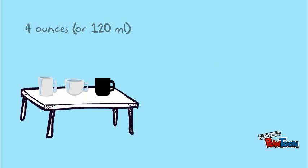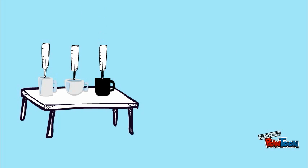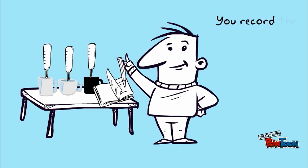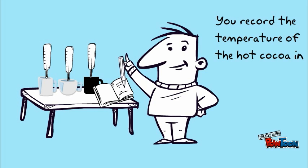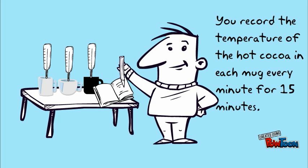You then pour 4 ounces of hot cocoa in each and place a thermometer in each of the 3 mugs. You record the temperature of the hot cocoa in each mug every minute for 15 minutes.